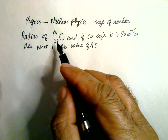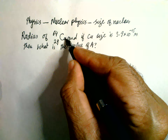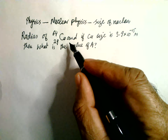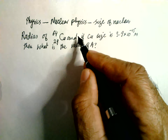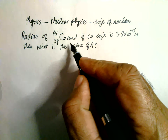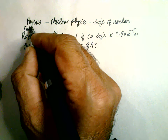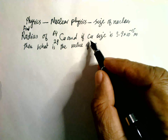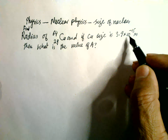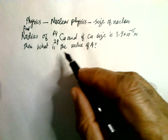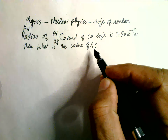The radius of copper, Cu-29 with atomic mass 64. So we have to find the radius of this one, and find the radius of this one. And if the copper size is 3.9 × 10⁻¹⁵ meter, then what is the value of A?